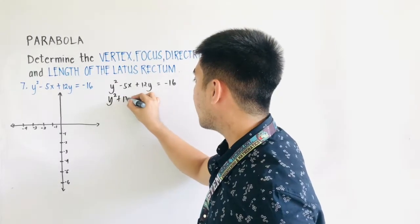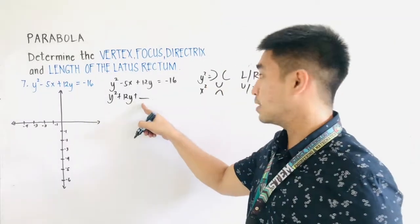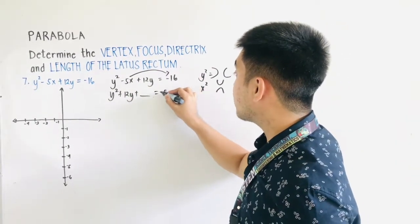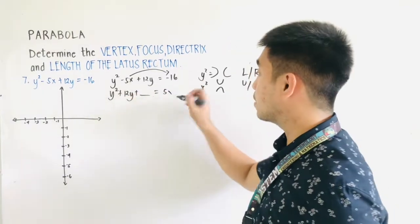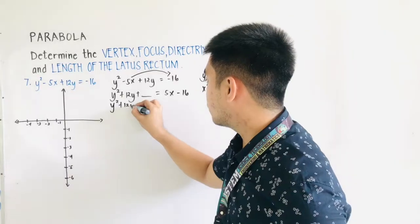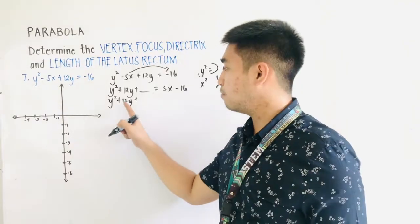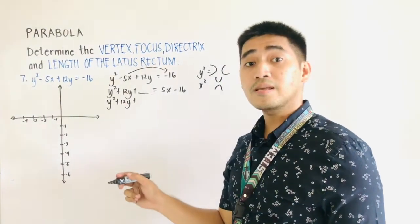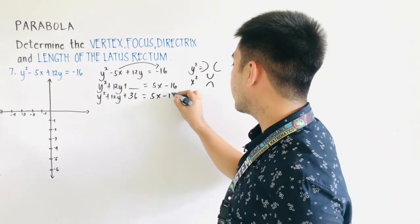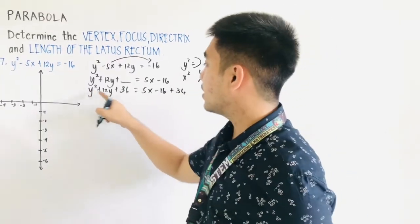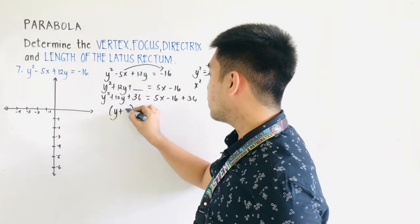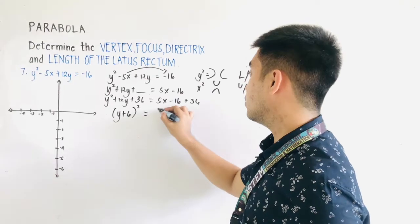So let's now complete the square. We rearrange to get y² + 12y + ___ = 5x − 16. To complete the square: take 12 ÷ 2 = 6, then 6² = 36. Adding 36 to both sides gives y² + 12y + 36 = 5x − 16 + 36. The left side is now a perfect square, giving us (y + 6)² = 5x + 20.